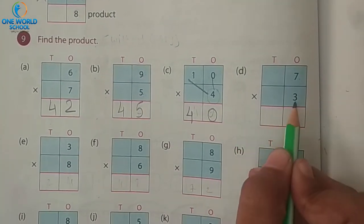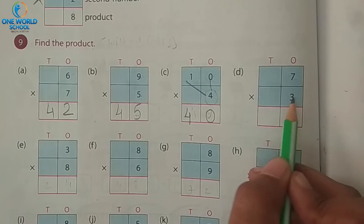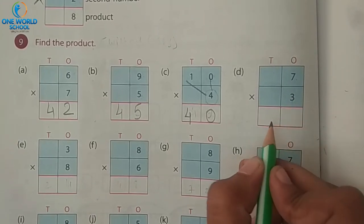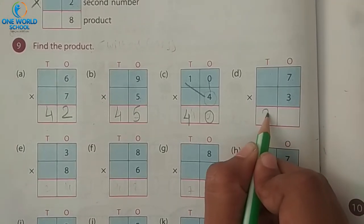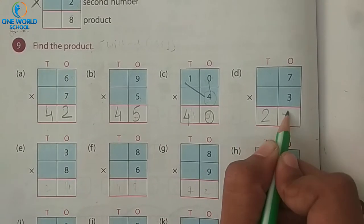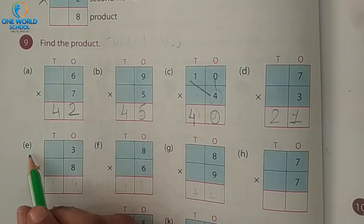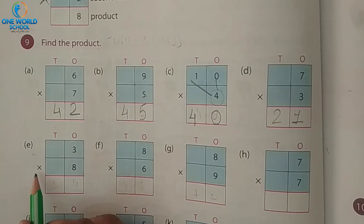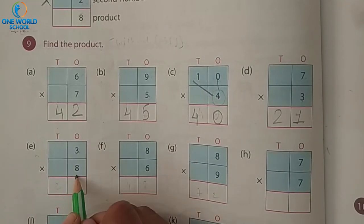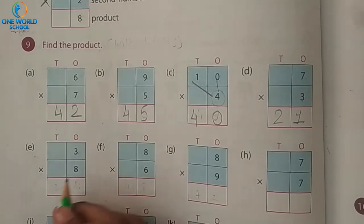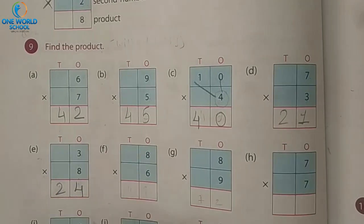Number D: three sevens are — or seven threes are — what is your answer? Twenty-one. Very good. Number E: three multiply by eight. So three eights are? Twenty-four. Very good.